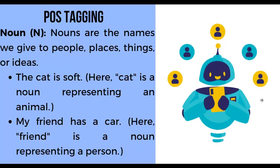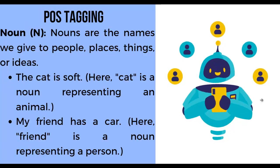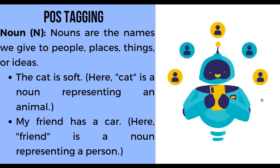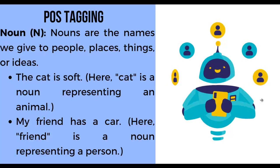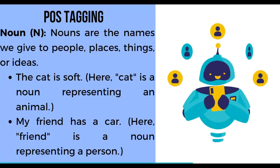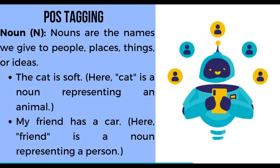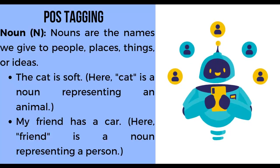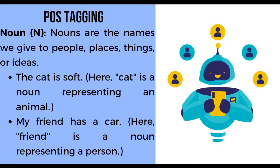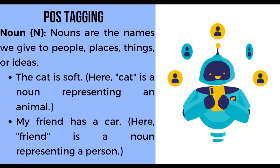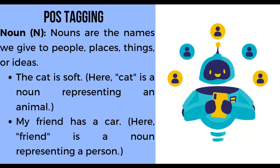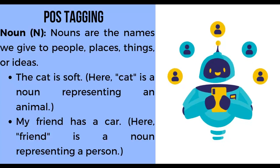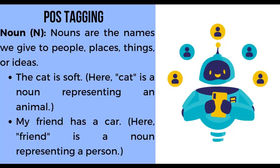Before we dive into the technical details of POS tagging in NLP, let's start with the basics by understanding the different parts of speech in the English language and their roles in sentences. First, noun. Nouns are the names we give to people, places, things, or ideas. For example: 'The cat is soft' — here, 'cat' is a noun representing an animal. Second example: 'My friend has a car' — here, 'friend' is a noun representing a person.